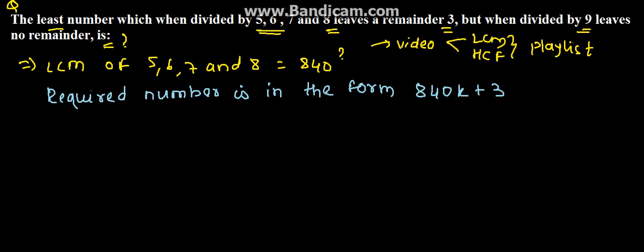Least value of K for which 840K plus 3 is divisible by 9.